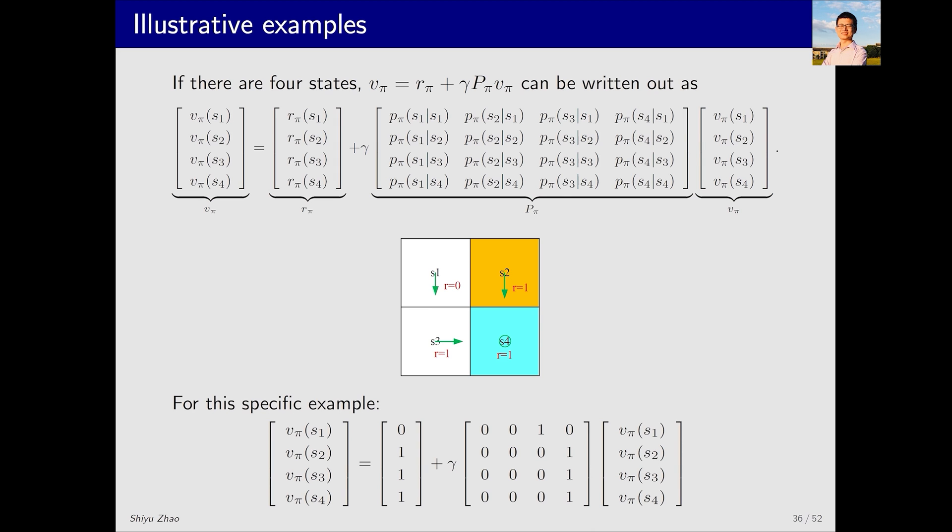Let's use an example to further illustrate the concept. Consider this scenario with a policy π, which is depicted with green arrows. Our task now is to write out its Bellman equation and matrix vector form. First, we have a vector form of state value on both sides. This is a vector for r_π. What is the first element of r_π? It represents the average immediate reward obtained from starting at s1. Starting from s1, the immediate reward is deterministic, resulting in 0. Similarly, starting from s2, s3 and s4, the immediate rewards are all 1.